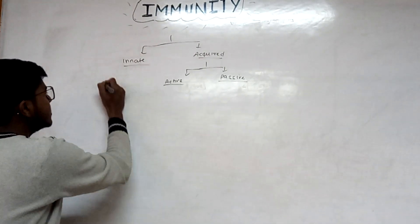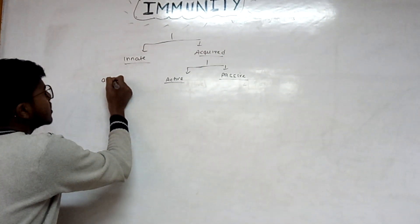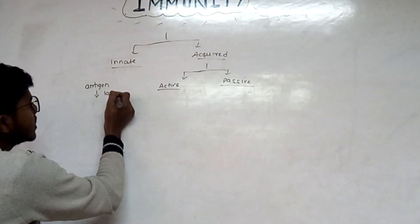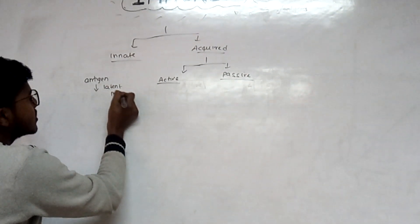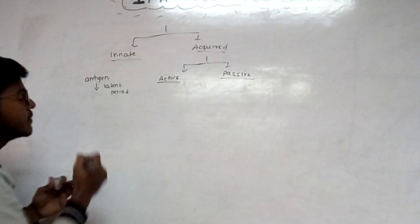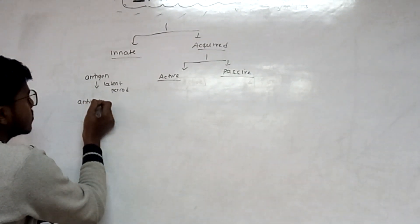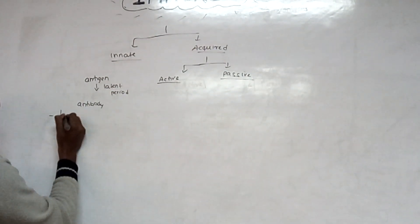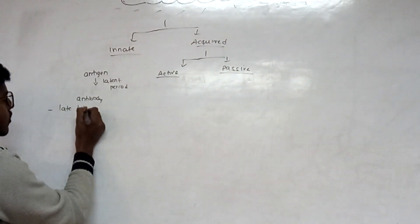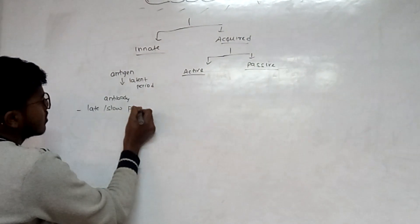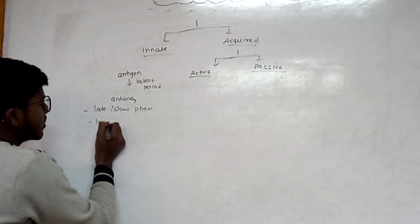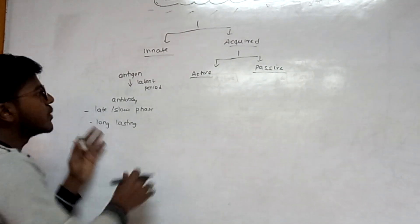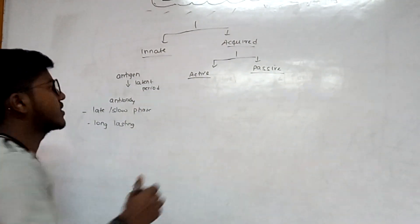Active immunity - as the name suggests, in this our immune system is playing an active role. Our immune system will form antibodies after exposure to antigen. There is a latent period of time in which our body processes the antigen and produces specific antibody. Active immunity has slow phase response but is long lasting - once formed, it will persist throughout lifetime.